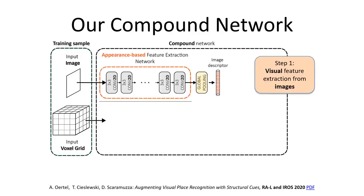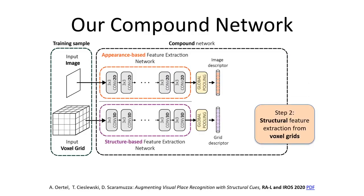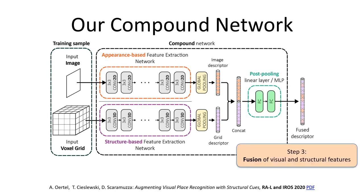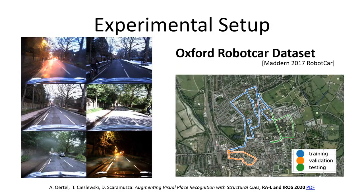These inputs are initially processed separately. First, visual features are extracted from the images. Second, structural features are extracted from the voxel grids. Finally, these features are globally pooled and then fused into a single location descriptor. Our method is both trained and tested on the Oxford RobotCar dataset, with training and testing done in geographically non-overlapping regions. The Oxford RobotCar dataset captures strong variations in visual appearance due to weather and season, and includes approximately 100 sequences of the same 10 km route through central Oxford, recorded at different times throughout a full year.